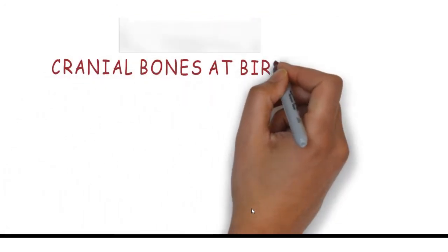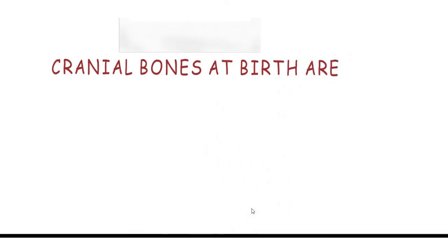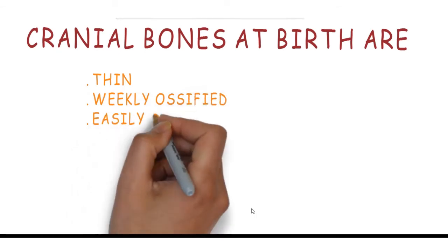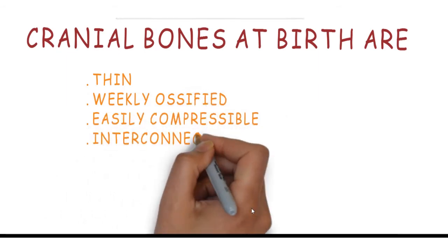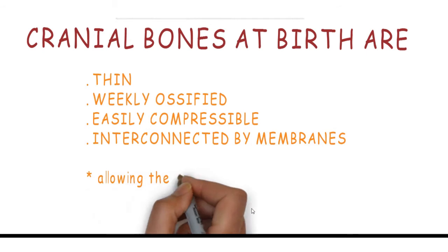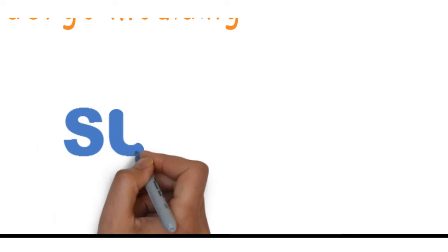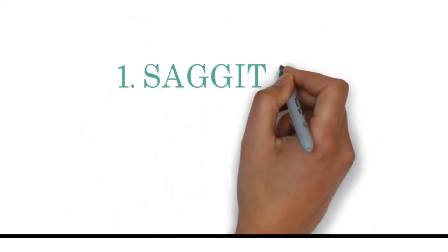These cranial bones have a peculiar character: they are very thin, weakly ossified, and easily compressible. They are interconnected by membranes which allow the skull bones to overlap one another and undergo a process called molding, through which the fetal skull can fit in the female pelvis during delivery.